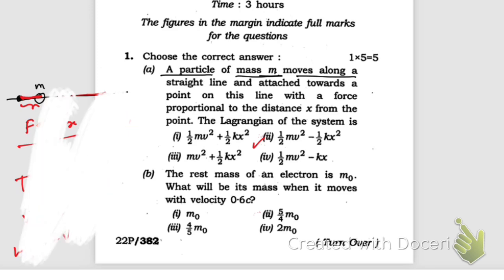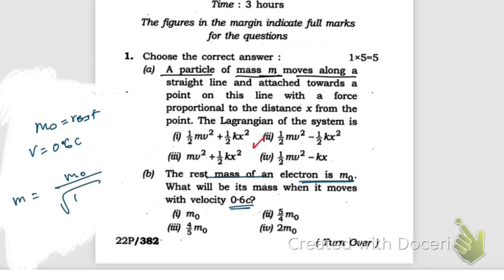Next question: the rest mass of an electron is m₀. What will be the mass when it moves with velocity 0.6c? We know relativistic mass m is given by m₀ divided by root over one minus v squared by c squared.